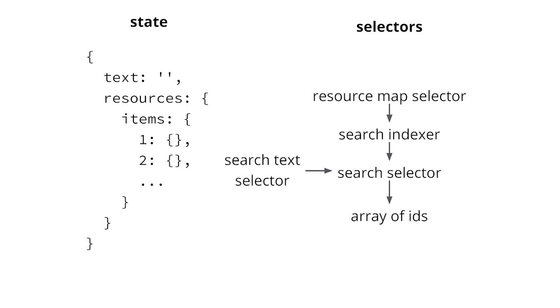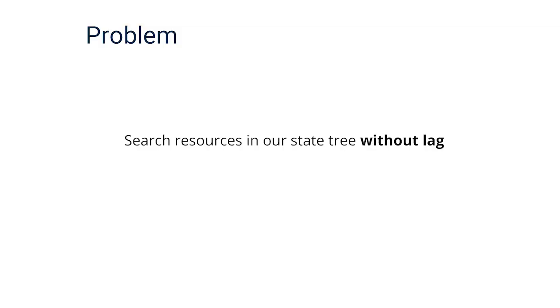This is roughly what your state ends up looking like — you have the search text and then an object of resources, with items where item one and item two each have their own objects. This is a visualization of the selector: you pull out a resource map selector, create a search indexer, compose that with the search text selector, and use that selector to pull out the array of IDs. This led to a new problem — we want to search resources but without lag. The solution worked, but it caused hiccups because anytime the resource map changed, we had to recreate the whole index, which caused too many problems and was not acceptable.